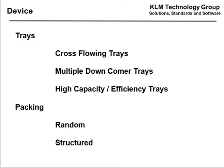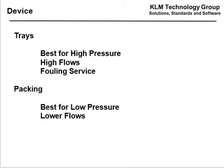Types of trays: we talked about pressure, now let's look at the device. You've got cross-flowing trays, multiple downcomer trays, high efficiency trays, and random and structured packing. Trays are best for high pressure because of the pressure effect and are better for high flows. Packing is best for low pressure — below 150 pounds or about 10 bar — and better for lower flows.